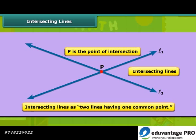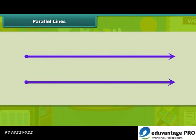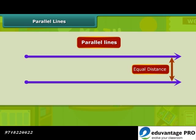A variety of examples around us has intersecting lines. Another set of lines are those which do not intersect. Such lines which do not meet at all are called parallel lines. The distance between these lines remains constant. Here, two lines L and M do not intersect, so they are parallel lines.